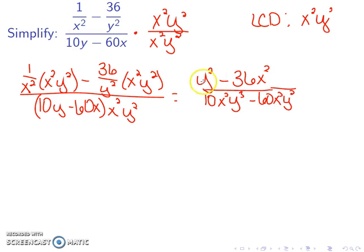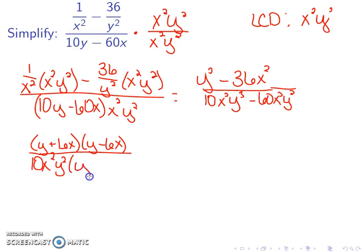Now we'll look at factoring. The top will factor into (y + 6x)(y - 6x). In the denominator, we can see that they each have a 10x squared y squared in common, and I'm left with (y - 6x). So we can cancel the (y - 6x), and we get (y + 6x) over 10x squared y squared.